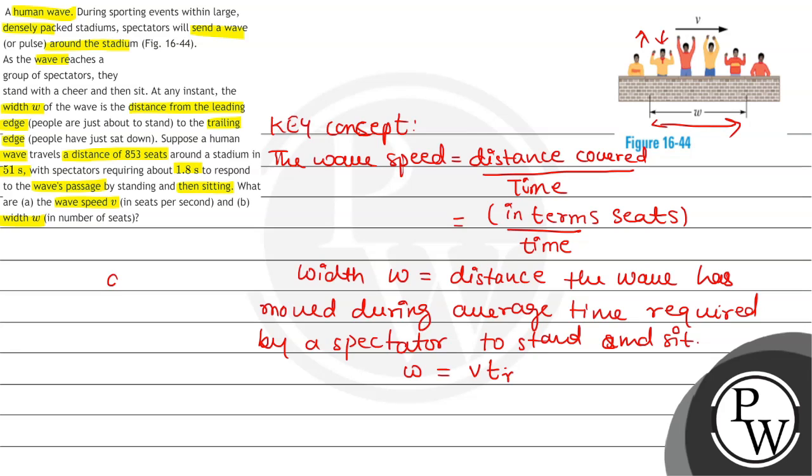Now in question we have given part A, wave speed will be equal to V is equal to number of seats 853 divided by 51 seconds. We will calculate this is about 16.72 seats per second.